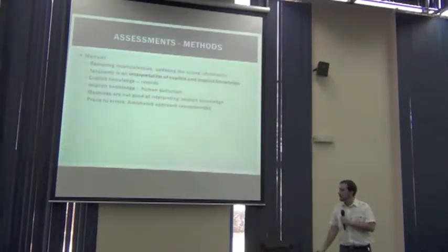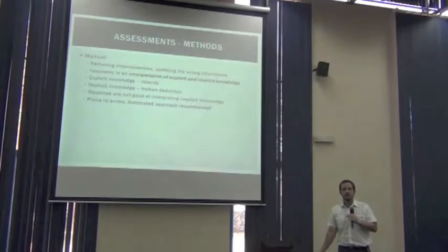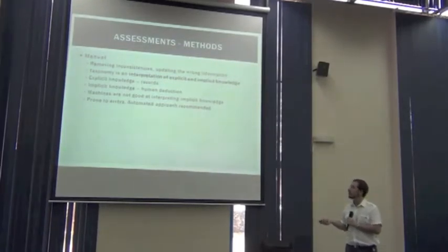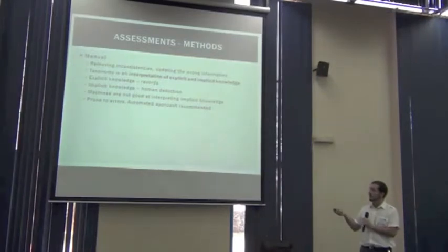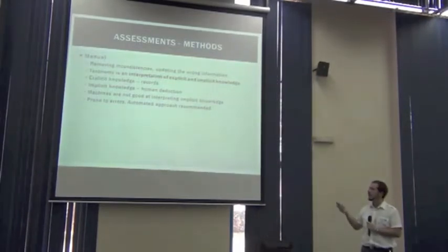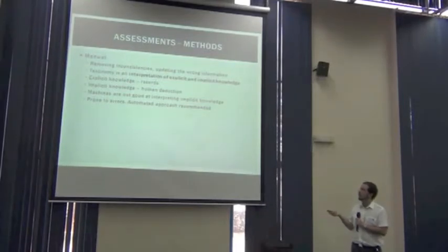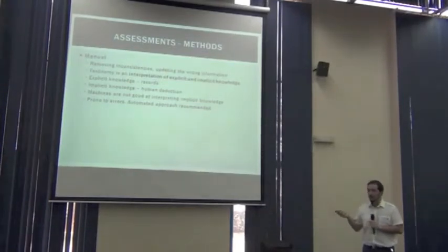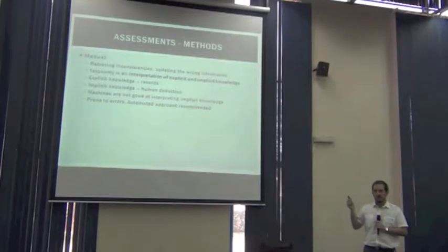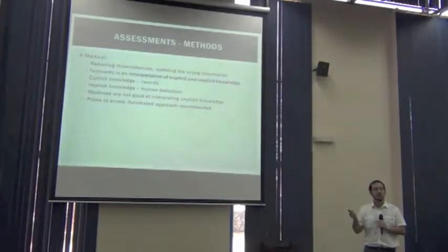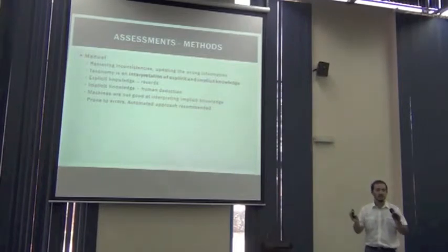So there are two broad types of taxonomic assessment methods, manual and automatic. When processing taxonomic information manually, our aim is to remove inconsistencies and obtain the right information. It's important to know that taxonomies have an interpretation of both explicit and implicit knowledge.